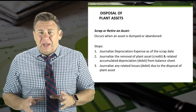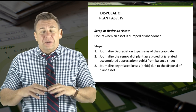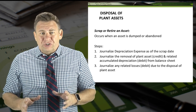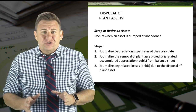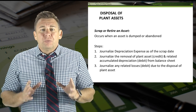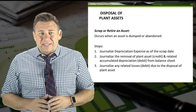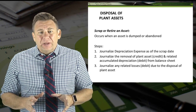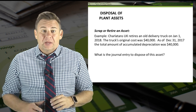When we dispose of a plant asset, there are a few steps we need to follow to make the proper journal entry. The first step is to record depreciation expense as of the scrap date, since it is unlikely that the accumulated depreciation account already has the correct balance. Next, we need to remove the asset from our balance sheet by zeroing out the plant asset and the accumulated depreciation account. Finally, we need to record any loss that occurs with disposal.